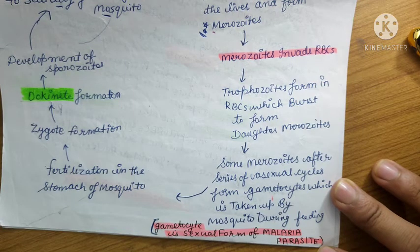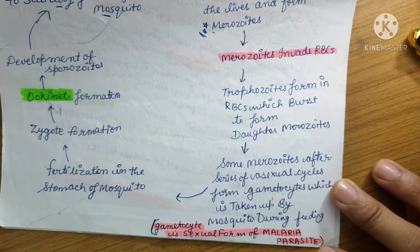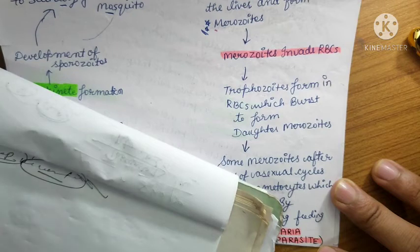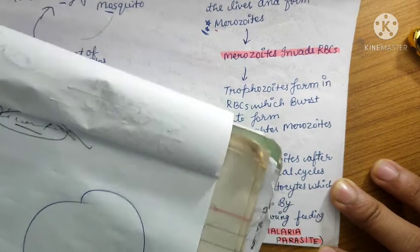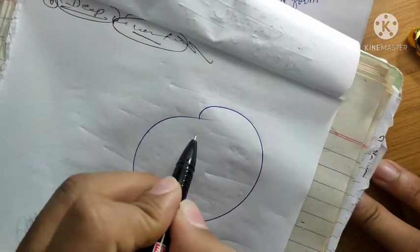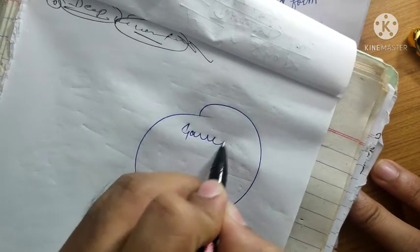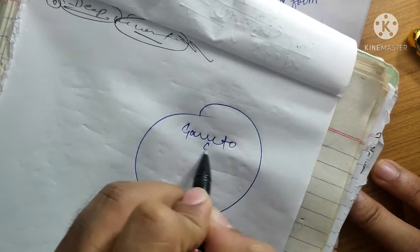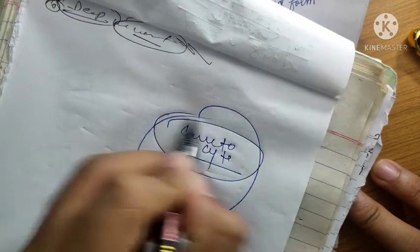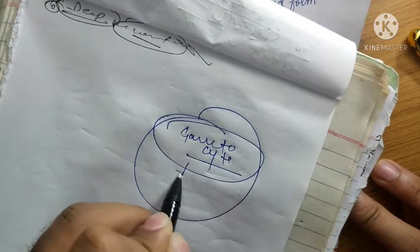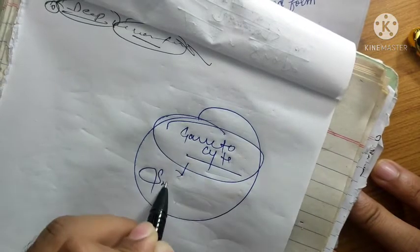The gametocyte — the sexual form of the malarial parasite — is an important exam question. In postgraduate exams, the question asked is: what is the sexual form of the malarial parasite? The answer is the gametocyte.